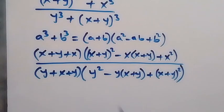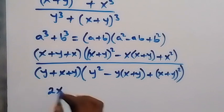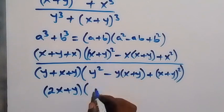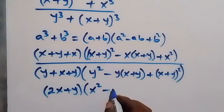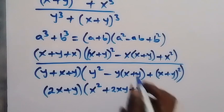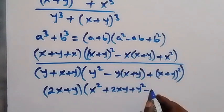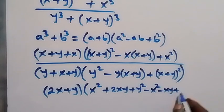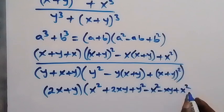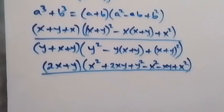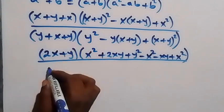Simplifying the numerator: x plus x gives 2x plus y, into the bracket. Expanding (x plus y)² gives x² plus 2xy plus y². Then using minus x to open the bracket we get minus x² minus xy, and then plus x squared.